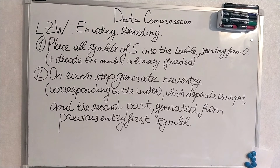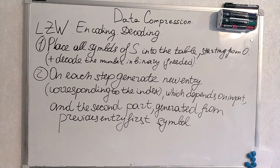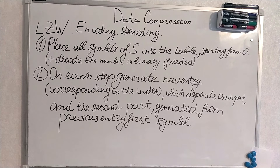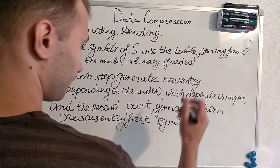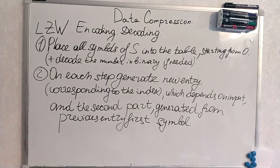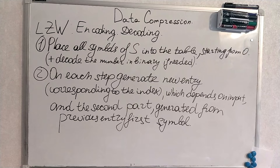As always, here is the outline of the formal algorithm. We will place all symbols from the source alphabet into the table starting from 0. If the code stream is encoded in binary, we will decode all the numbers in binary to make them integers. On each step we will generate a new entry into the table corresponding to the index, which depends on the input and the second part generated from the previous entry's first symbol.